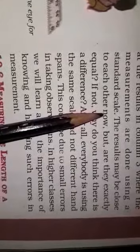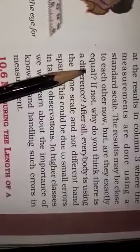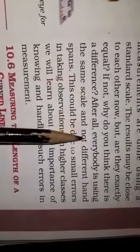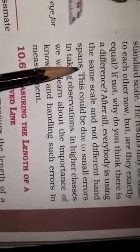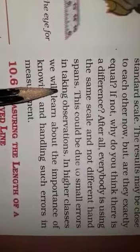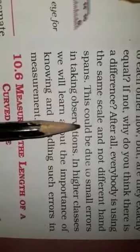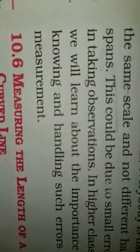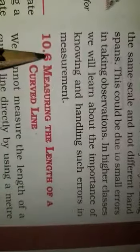When measurement is done using a standard meter scale, the results may be close to each other — perhaps only one or two points of difference. But are they exactly equal? If not, why is there a difference? Even though everybody is using the same scale, small errors in taking observations can cause a little bit of difference. In higher classes, we will learn about the importance of knowing and handling such errors in measurement.